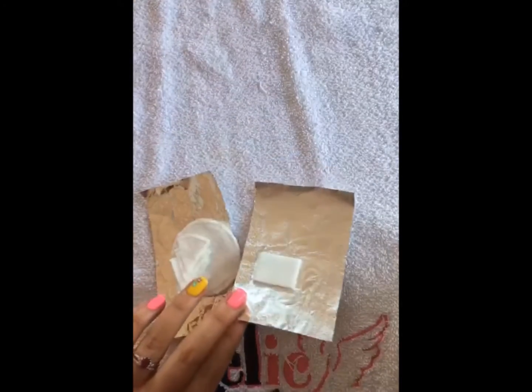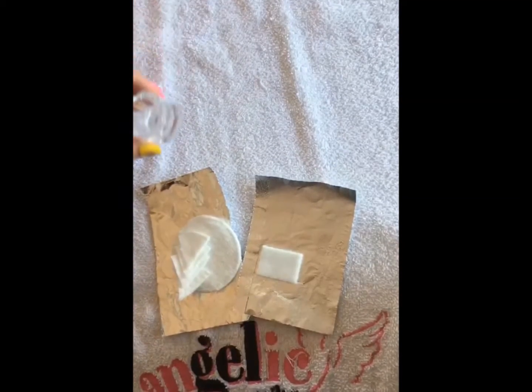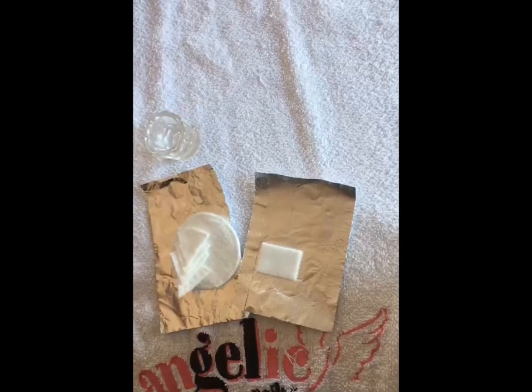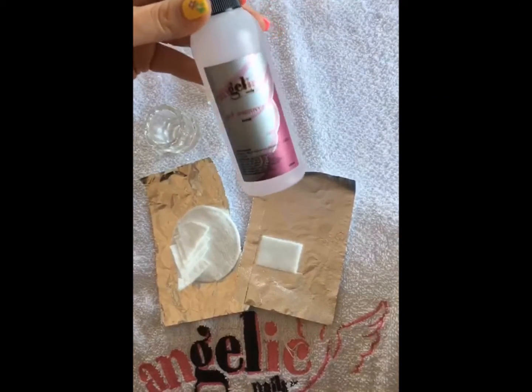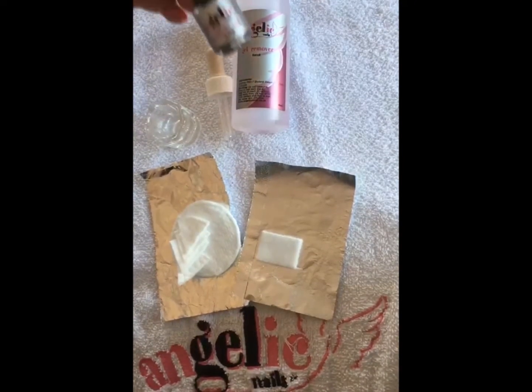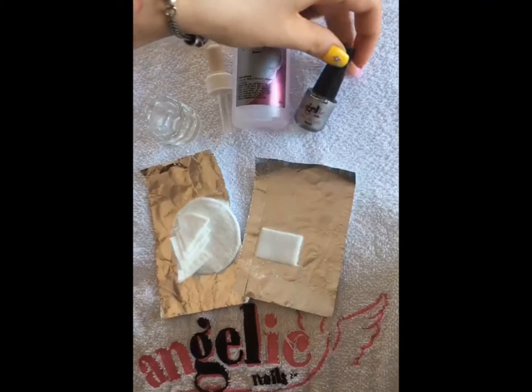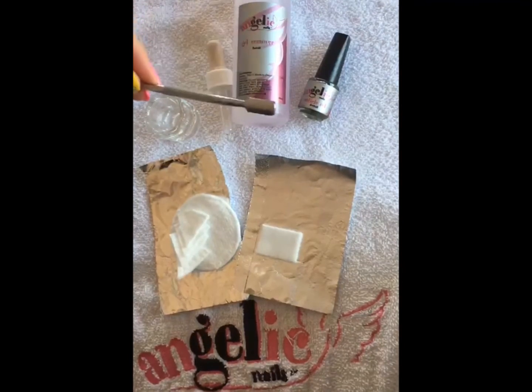Alternatively, you can use a foil wrap. You'll also need a dappen dish, pipette, gel remover, cuticle oil, and a gel removing tool.